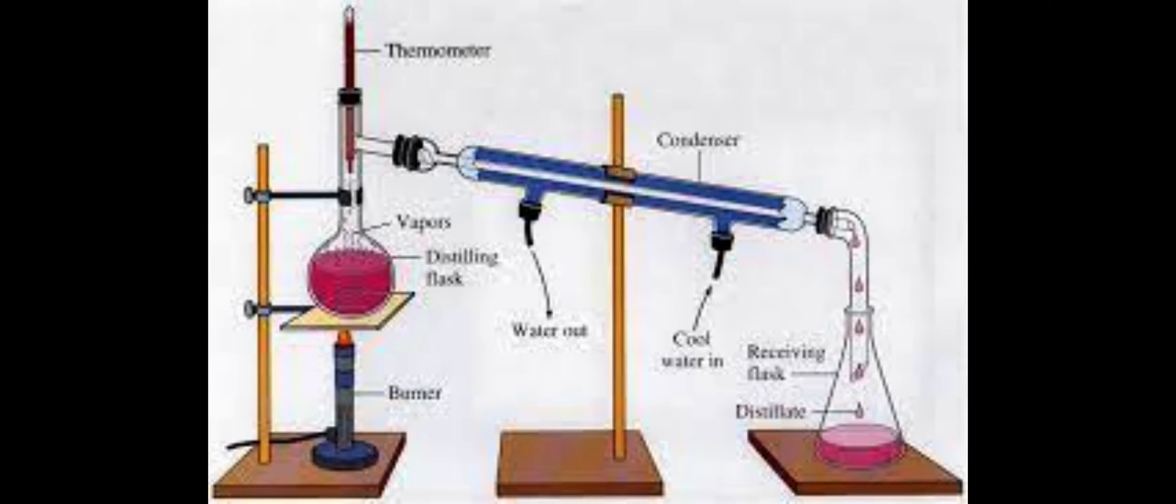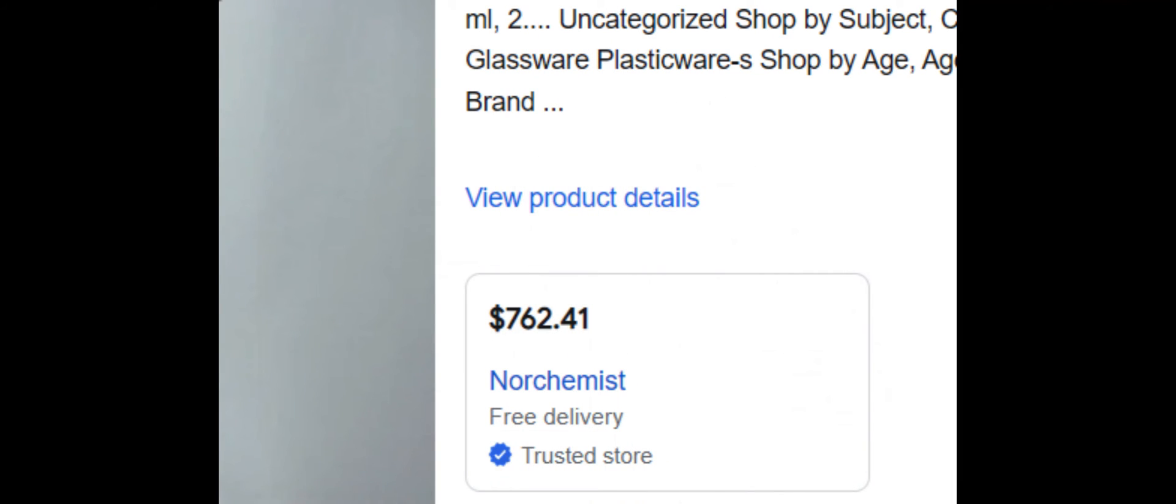Another method to extract deuterium is to distill it, which works because heavy water has a slightly higher boiling point than regular water. I was unable to use this method, however, for cost reasons.